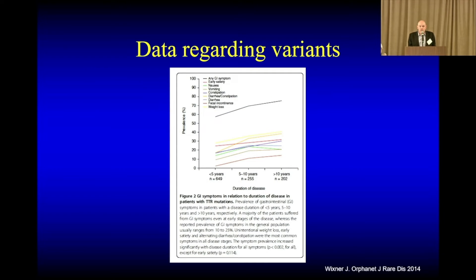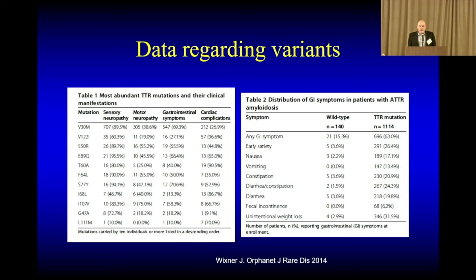If you look at that same group and follow them a long time, they did see that the longer people have a diagnosis of amyloid and symptoms of amyloid, the more symptoms there were. That reinforces what we see clinically — if you do have a diagnosis, treatment earlier is probably a benefit. The neuropathic variants seem to have much higher GI rates than the cardiac variants.